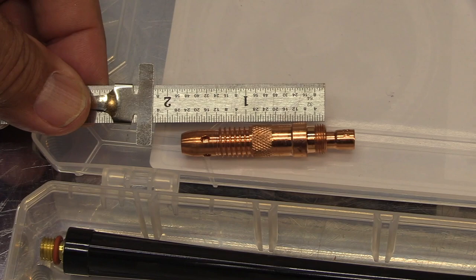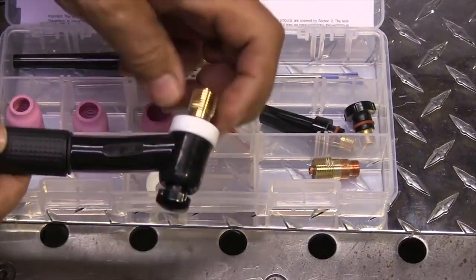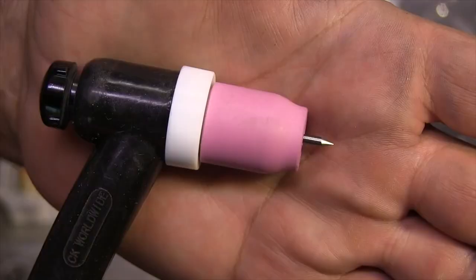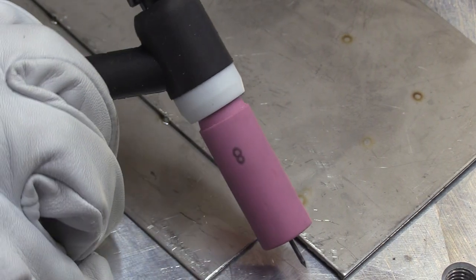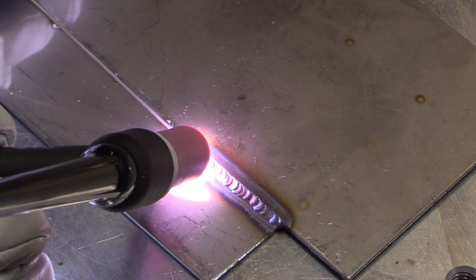Let's talk about why you would want to use a gas lens to start with. This is a collet body for 17 and 26 style torches. First upgrade I would recommend is a stubby gas lens kit because not only does it shrink the overall size, it provides better gas coverage and gives you a longer stick out.